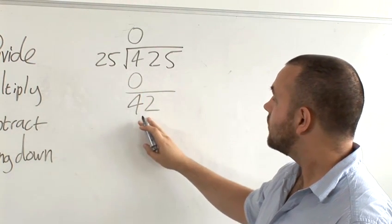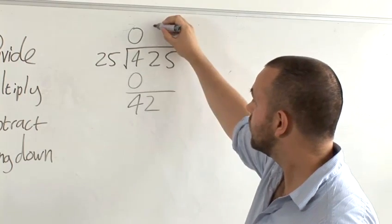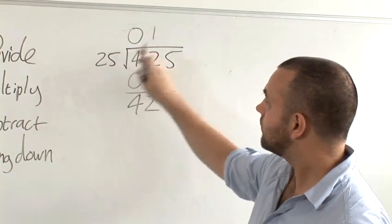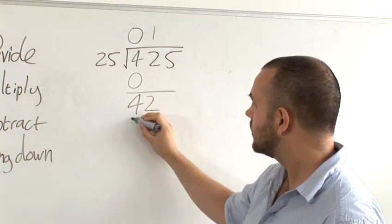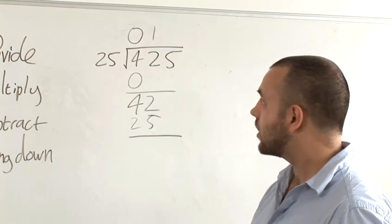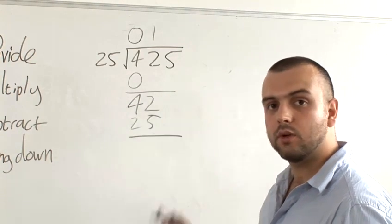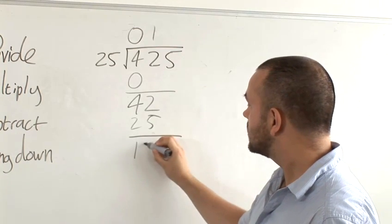How many times will 25 go into 42? It will go in once. 25 times 1, multiply, gives us 25. Then subtract. 42 minus 25 gives us 17.